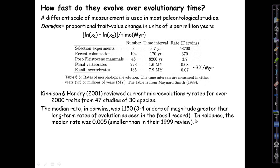That's three to four orders of magnitude greater than the long-term rates of evolution seen in the fossil record. In Haldanes, their median rate actually went down to 0.005 — five thousandths of a Haldane — smaller than the median of 0.03 in their 1999 review, so nearly an order of magnitude smaller. But still remarkably high when you consider how much phenotypic change could happen in tens or hundreds of generations, based on a very wide range of taxa in many different environments.